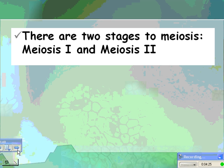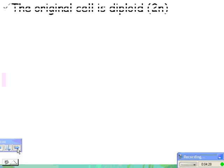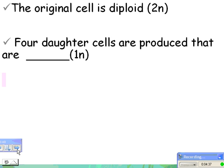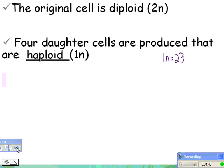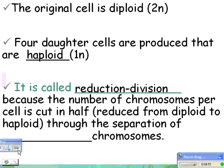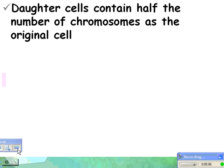There are two stages to meiosis: meiosis one and meiosis two. The original cell is diploid, 2N — in us, the 2N number is 46, we have 46 chromosomes. Four daughter cells are produced and they are all haploid, 1N. For us, the 1N number is 23. This is called reduction division because the number of chromosomes per cell is cut in half — reduced from diploid to haploid through the separation of the matching ones, the homologous chromosomes. Daughter cells contain half the number of chromosomes as the original cell.